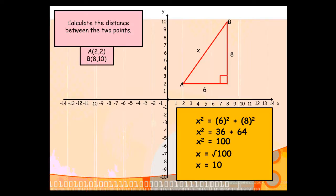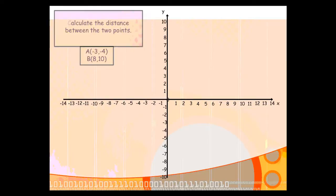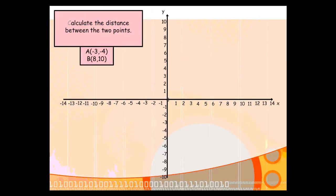Now, some people get confused with examples which involve negative coordinates, or coordinates which have negative values in them. So let's have a look at an example. Again, two points, finding the distance between them. This time, A is the point negative 3, negative 4, and B is the point 8,10.